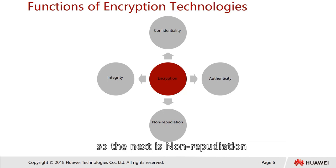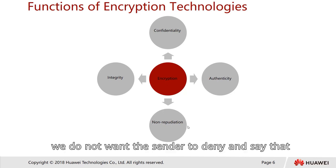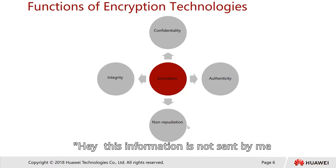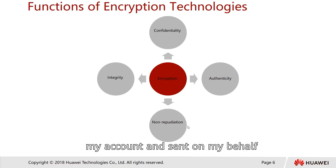The next is non-repudiation. Non-repudiation means if data has been sent by a sender, we do not want the sender to deny it — saying, 'This information was not sent by me, my account has been hacked, or somebody spoofed my account and sent on my behalf.' So this is called non-repudiation.